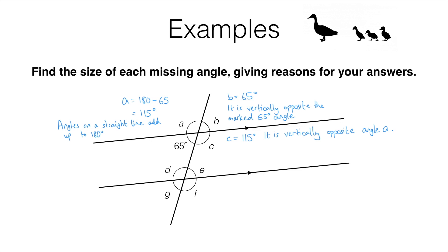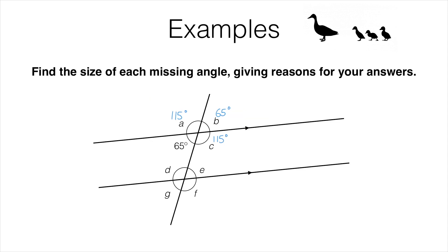Before we can work out what the remaining angles down here are, we need to understand alternate and corresponding angles. I'm going to clear the screen and just leave the angles marked for A, B and C. Now if you ever see a question in an exam about angles and you see that you have got parallel lines in the question, there's a very good chance that it's going to involve alternate or corresponding angles. These only come up when you've got parallel lines.